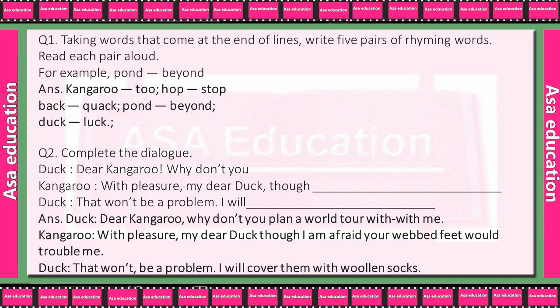Read each pair aloud. For example: on, beyond. Ab iska answer hai — kangaroo/to, hop/stop, back/quack, pond/beyond, duck/luck.